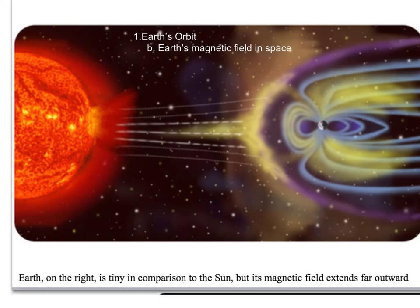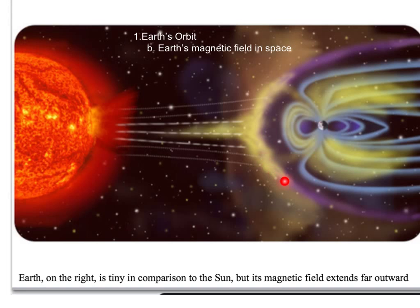We already covered Earth's magnetic field in Unit 1 when we talked about properties of the Earth, but it's interesting to note that Earth's magnetic field extends far beyond the planet, way into outer space, and what it does is shield us from potentially very harmful rays from the sun. If you were in a spaceship out beyond that field, you'd be exposed to solar flares, radiation, and that kind of stuff — outside the protective magnetic field of the Earth.